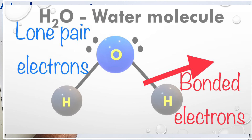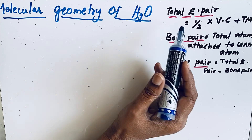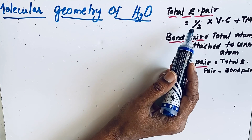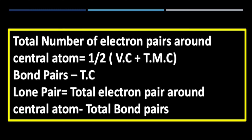The first step to find the molecular geometry of any molecule is to find the total electron pair, then the bond pair and lone pair. Here you can see the total electron pair, bond pair, and lone pair formula. Total electron pair is equal to half into (VC + TMC), where VC is the valence electron of the central atom and TMC is the total monovalent atoms attached to the central atom.